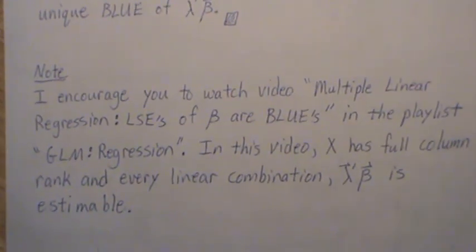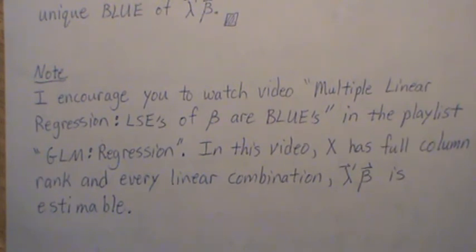One note though: I encourage you to go back and watch a video that I have, Multiple Linear Regression: Least Squares Estimates of Betas are BLUEs. That's in my playlist General Linear Models Regression. In that video, X has full column rank and every linear combination is estimable, so we didn't have to worry about that, and you can see the differences in the proofs. That's all I have for this video. Hopefully you enjoyed it. I sure did. Please like the video and subscribe so you don't miss the next one. Thanks, bye!